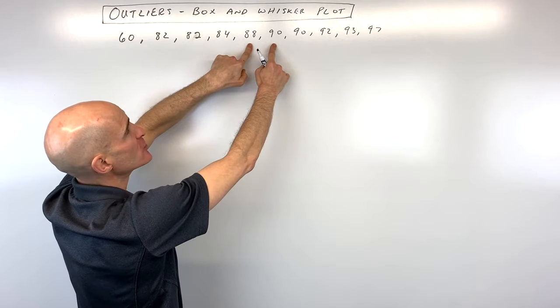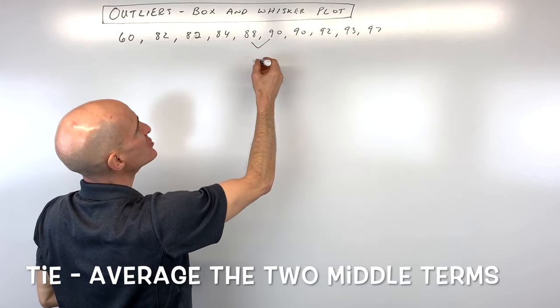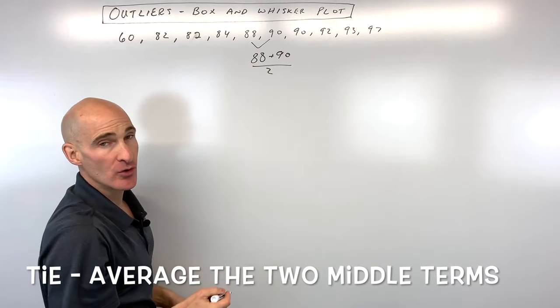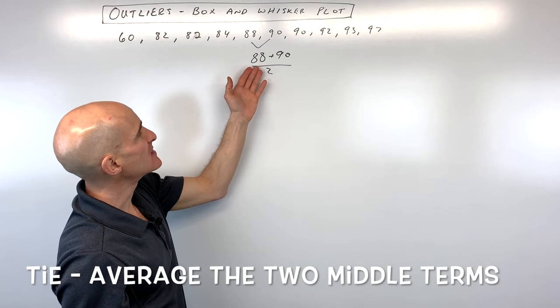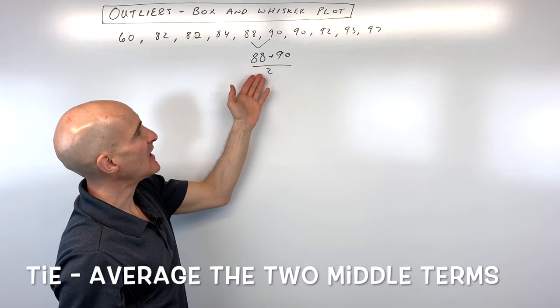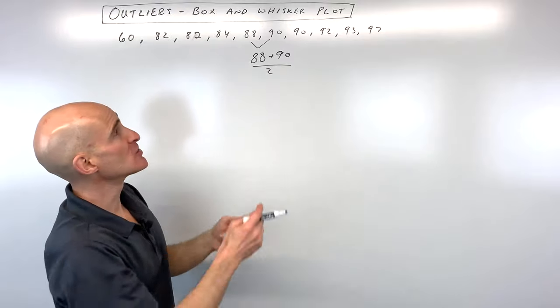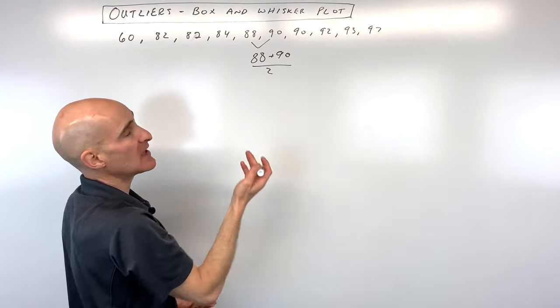Now notice there's 2 that are in the middle. So when there's a tie like that, what you do is you add those 2 numbers together and you divide by 2. So here you can see this is coming out to 178 divided by 2, which comes out to 89.